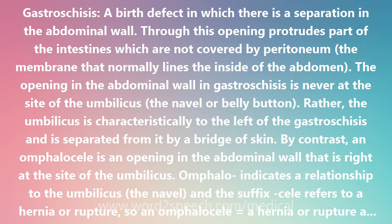By contrast, an omphalocele is an opening in the abdominal wall that is right at the site of the umbilicus. 'Omphalo' indicates a relationship to the umbilicus, and the suffix '-cele' refers to a hernia or rupture. So an omphalocele equals a hernia or rupture at the umbilicus.